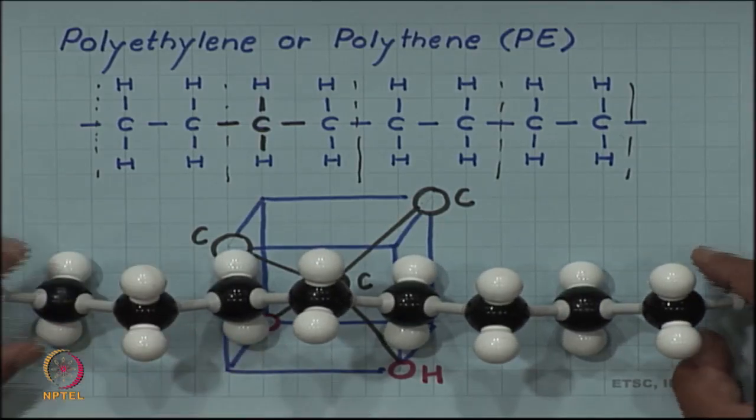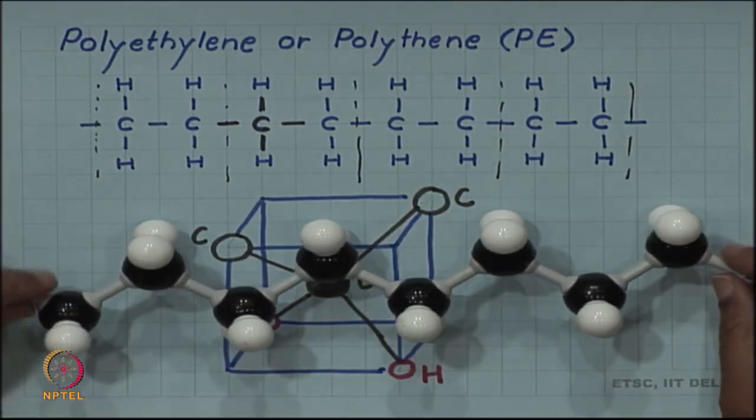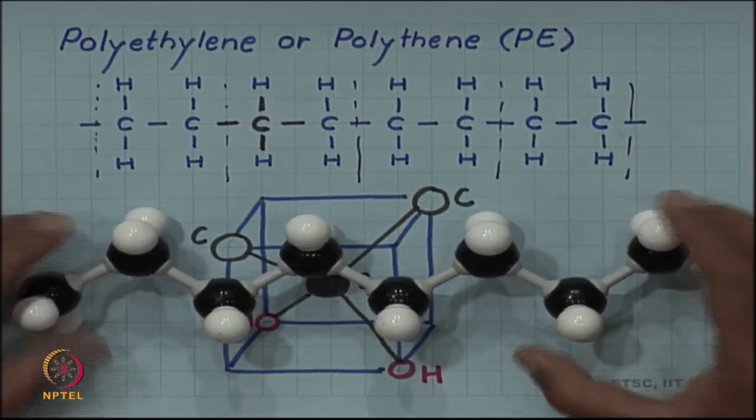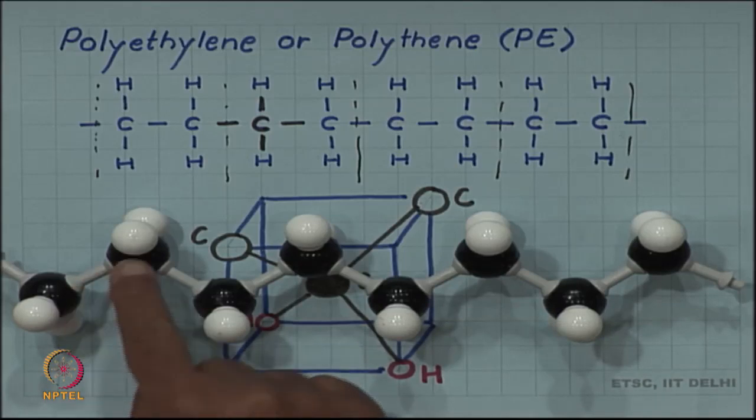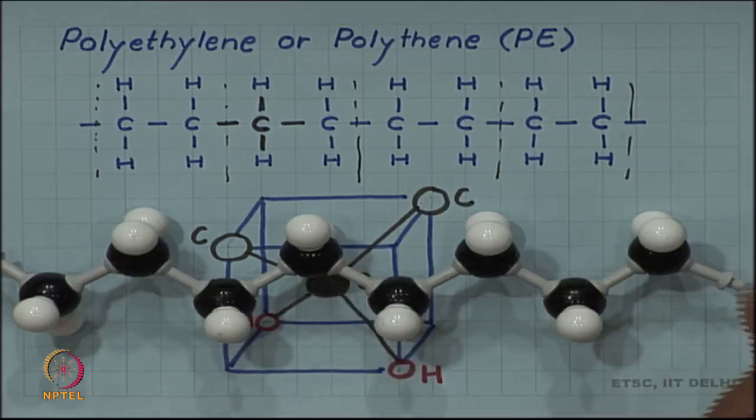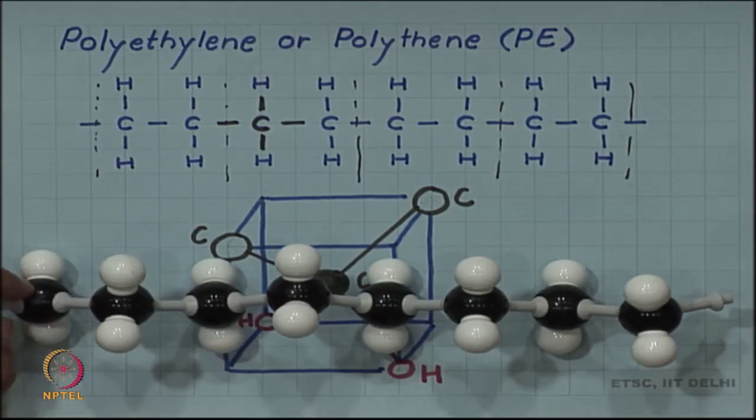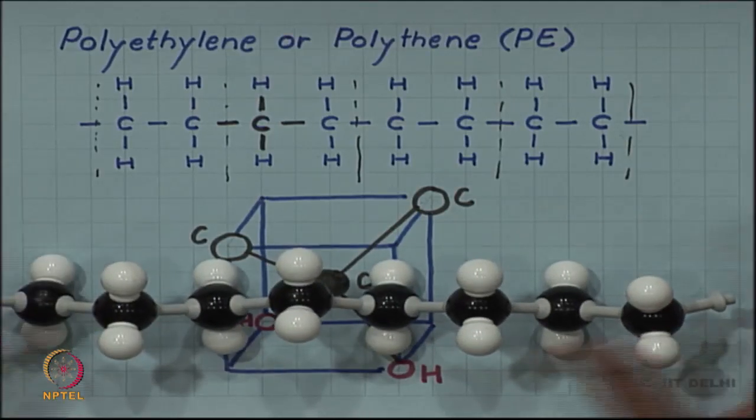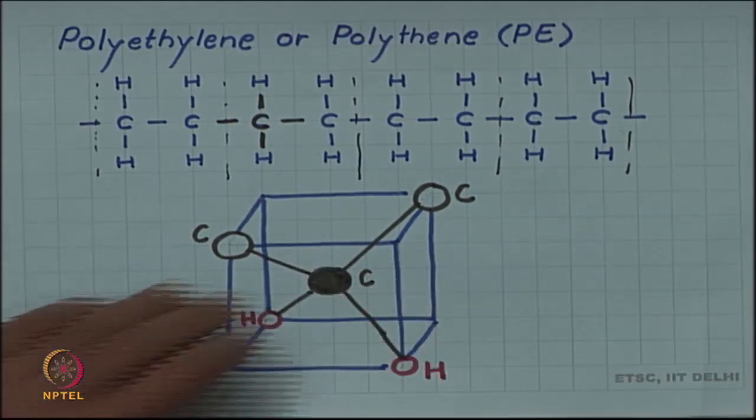They are really not in the plane - they are pointing either down or up depending upon the location of the carbon atom. The carbon atoms themselves are forming a zigzag formation. This is the straightest possible configuration for this chain.